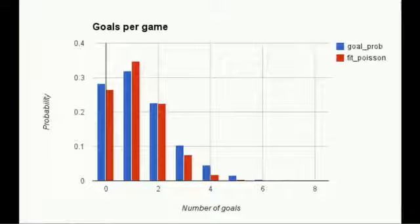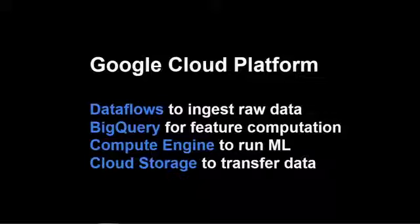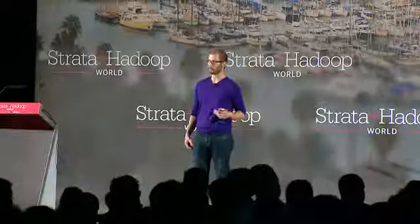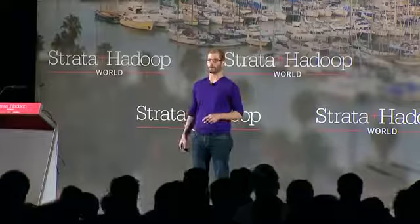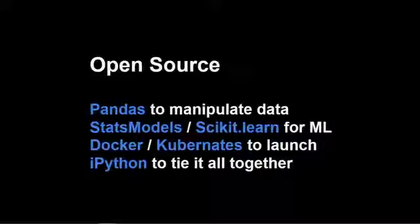So what were the tools we used? I work on Google Cloud, so I wanted to use the Google Cloud platform. We used Google Cloud Dataflow to ingest data as the games were happening, so we could make real-time predictions. We used BigQuery for feature computation and exploration to quickly mine data and ideas about how those affected predictions. We used Google Compute Engine to run the machine learning code and spin up clusters for parameter exploration. We also used a number of open source tools: Pandas, Stats Models, scikit-learn, Docker to package up the code, and IPython to drive the process.